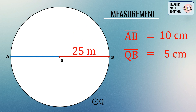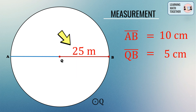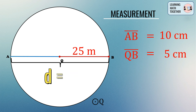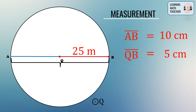Another example: what if the radius is given but we have to find the diameter? Say line segment QB equals 25 meters and we have to find line segment AB. Just do the reverse — if the radius is given, double it to get the length of the diameter. So double 25 meters gives us 50 meters.